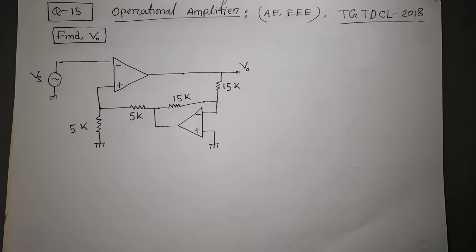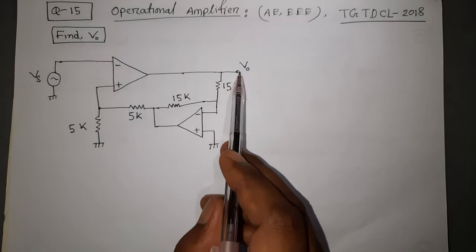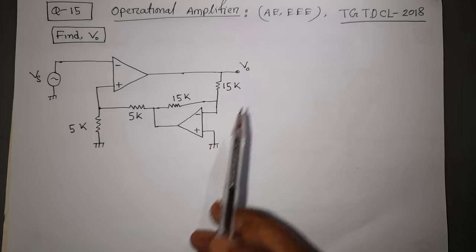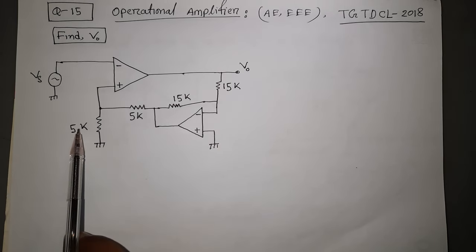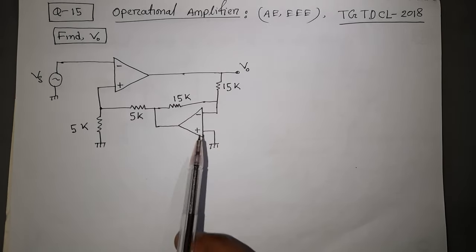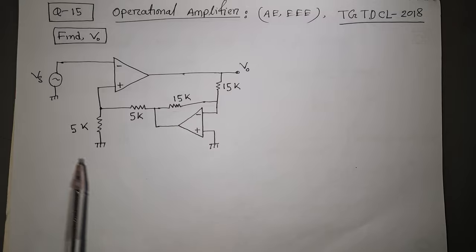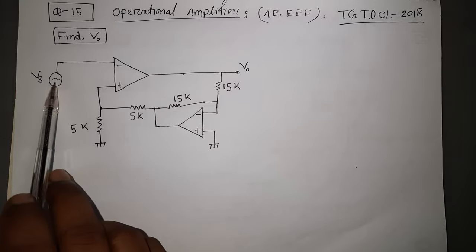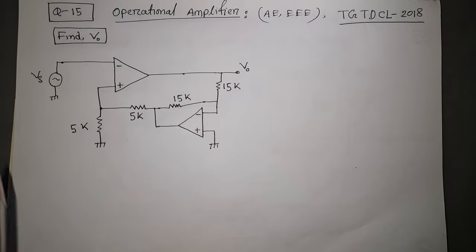This is the Assistant Engineer II. This is the circuit. Find V0, the output voltage V0. The circuit has resistor values 5K, 5K, 5K, 5K, and 15K. We don't need the Q machine. Even V1 which means V0.